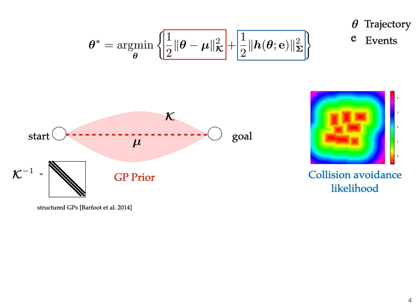For example, the collision avoidance likelihood can be defined in terms of a signed distance field. Kappa and sigma correspond to the covariances of prior and likelihood respectively and are usually parameters set by the user.